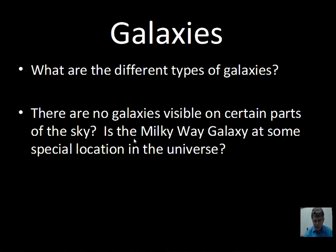We're going to discuss spiral galaxies, barred spiral galaxies, elliptical galaxies, and also irregular shaped galaxies. Then in this video we'll talk about where we can see galaxies on the sky and where we can't, and whether that means the Milky Way is at a special location in the universe.